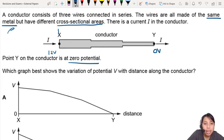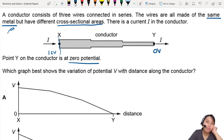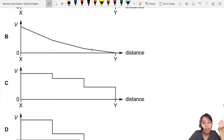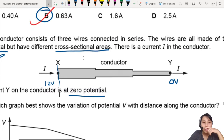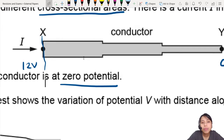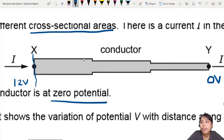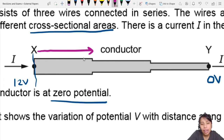Which graph best shows the variation of potential with distance? If you take a scanner and start from here and slowly scan your way to there, how would the potential drop? You need to know that potential is dropping. Are all the graphs dropping? Yes, they are. The second thing you need to know is that in the conductor, the drop is continuous — if I travel from here to here, there will already be a potential drop as I go along.